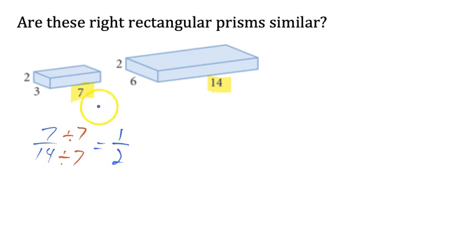The first pair of sides we checked has a ratio of 1 to 2. The second pair of corresponding sides also has a ratio of 1 to 2.